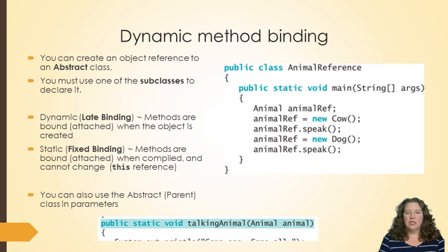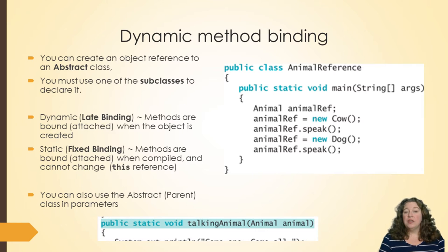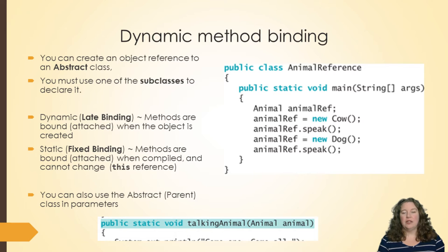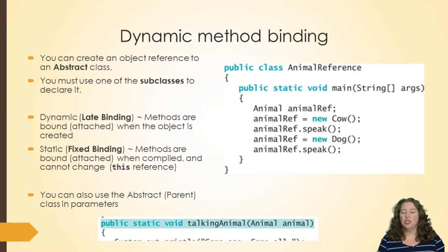Now we're going to talk about a concept called dynamic method binding. When you create an abstract class like our animal, you have to use one of the subclasses to declare it — you don't ever reference an abstract class directly. However, you can create an object reference to an abstract class. So our animal reference type is fine to declare. When you instantiate it — for example, animal reference equals new cow — you're actually setting your animal reference to a cow as opposed to just a generic animal.